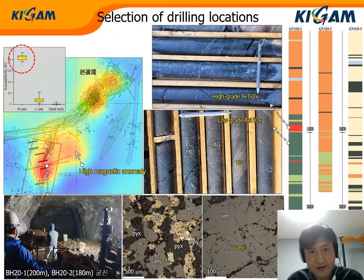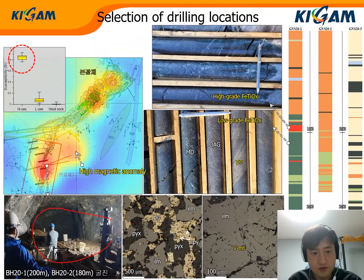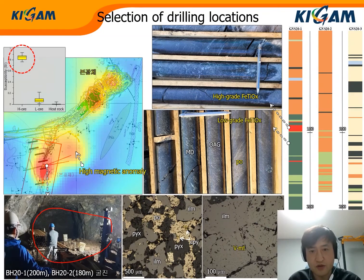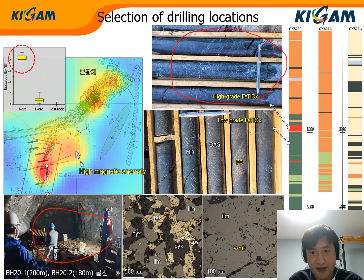The selected area for drilling could not be approached on the surface because of extremely rugged terrain. Our team found an abandoned mine tunnel. We drilled a 200-meter-long, 10-degree-slope borehole at the end of the tunnel and hit the high-grade ore target — more than 0.5% vanadium and 40% magnetite grade.